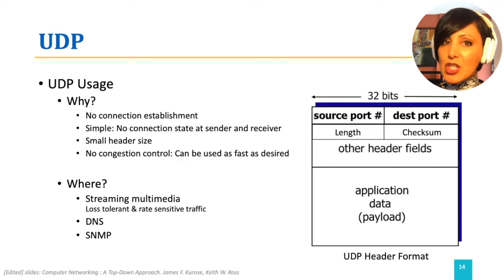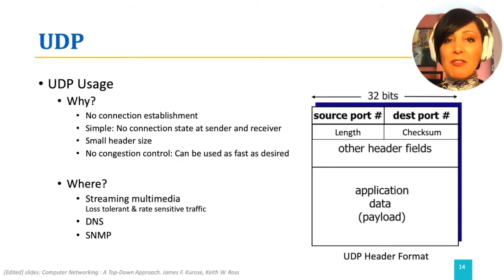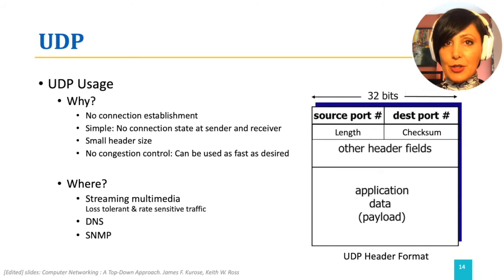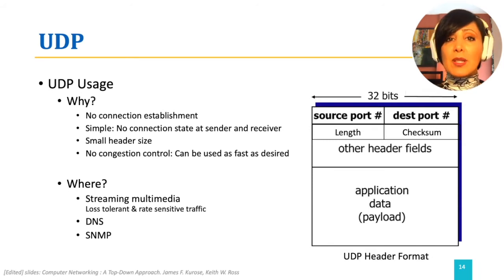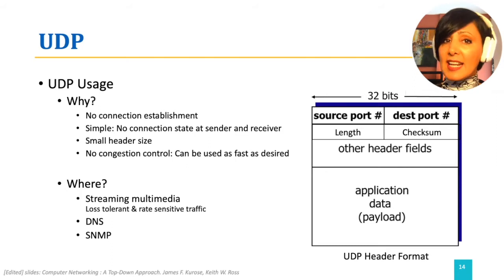UDP does not have congestion control, and therefore it could be faster and provide more control on scheduling when to send the packets out of the sender. For these reasons, it could be used for applications like multimedia streaming, and is used by known protocols like DNS and SNMP.